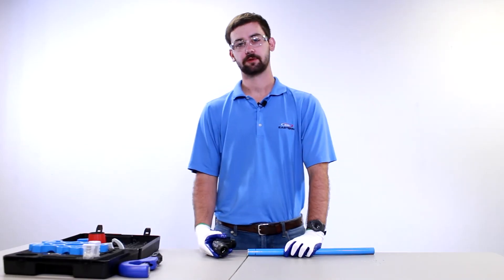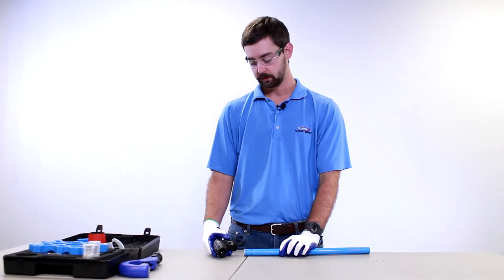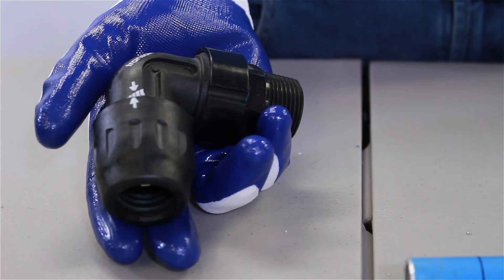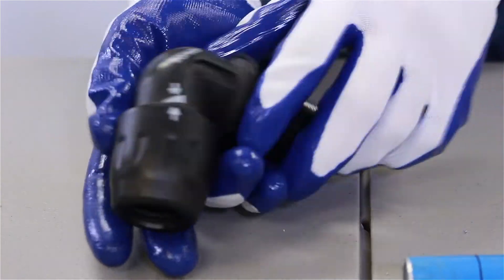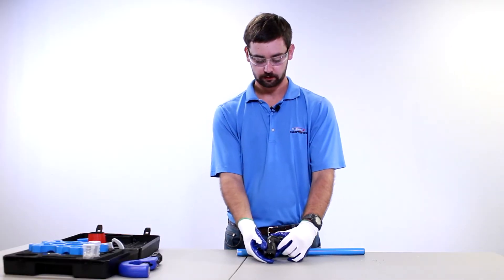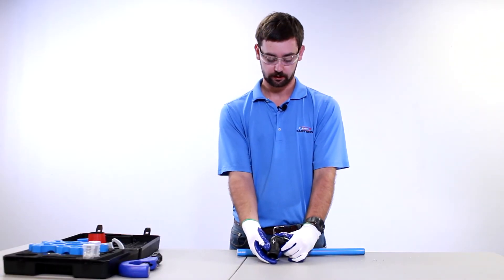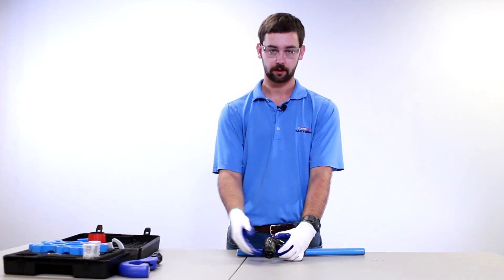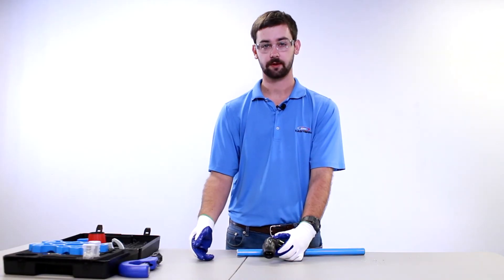So once we have our depth of insertion mark marked on our pipe, the next step is we're going to put our fitting onto our pipe. Today we're working with a one inch male adapter 90. And so with this fitting here, you're going to want to make sure that the arrows are lined up with themselves. And so once you have the arrows lined up, you're ready to put the fitting onto the pipe.